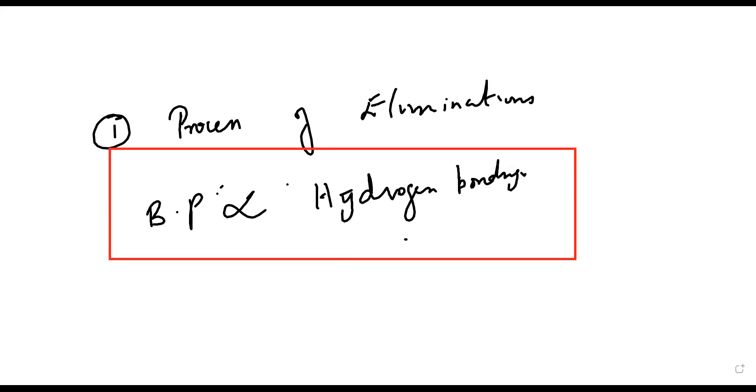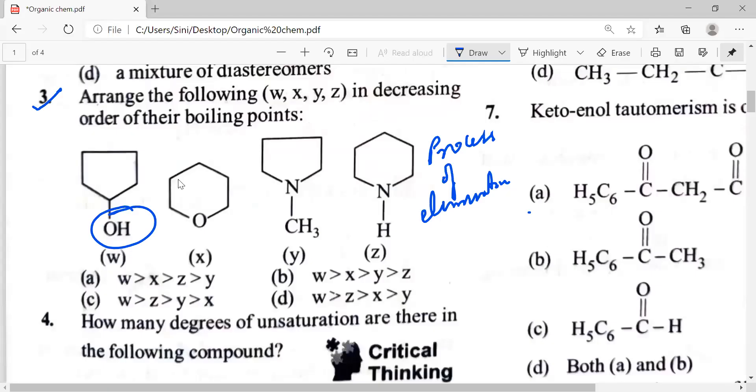While coming to this, see the options. If I take the second one, if I take x here, in x we can see there is no hydrogen bonding. Actually it's ether actually here, it's O, so it should be in the least thing.